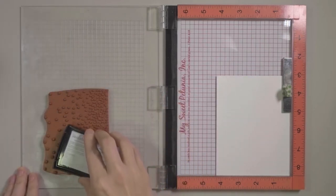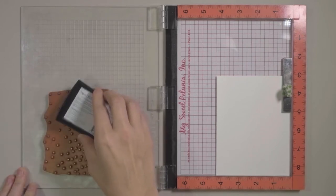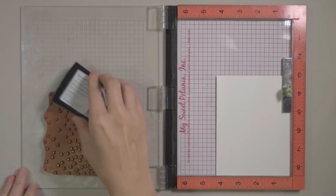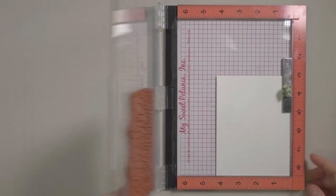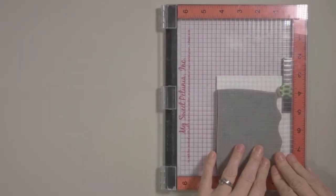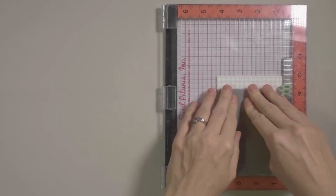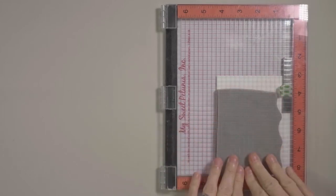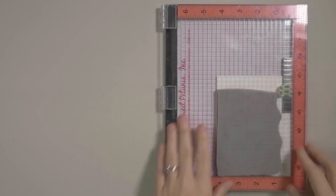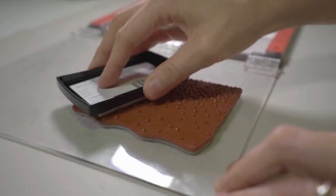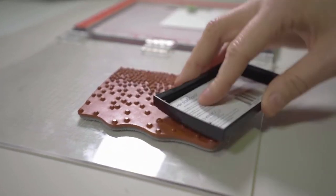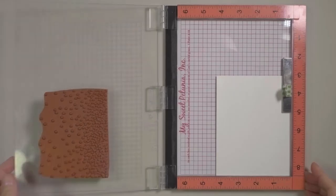I'll be embossing it, so I'm using VersaMark ink to give the embossing powder something sticky to stick to, although embossing powder does not need stickiness to stick, right? It likes to stick everywhere. For each one of these background stamps I'm double stamping. I just want to be sure to have fantastic coverage.